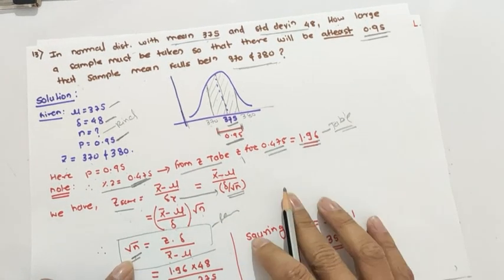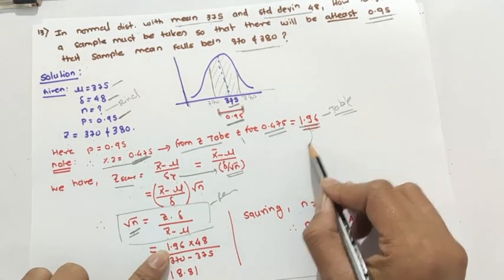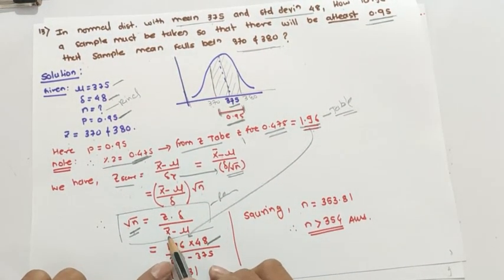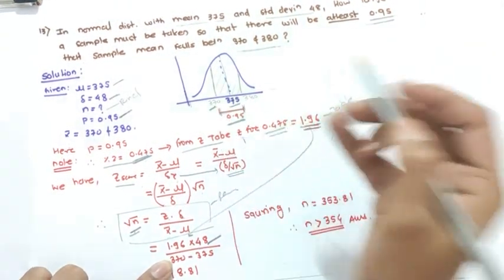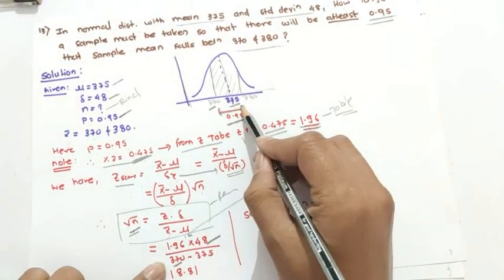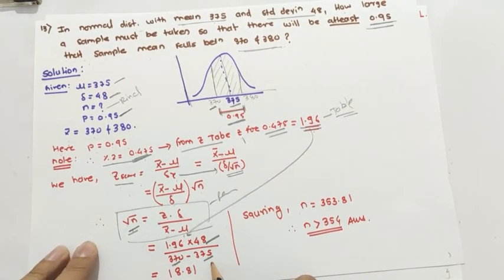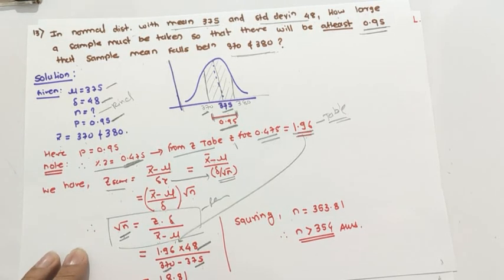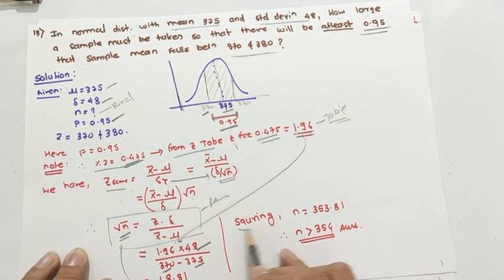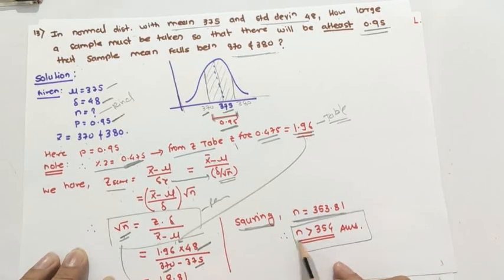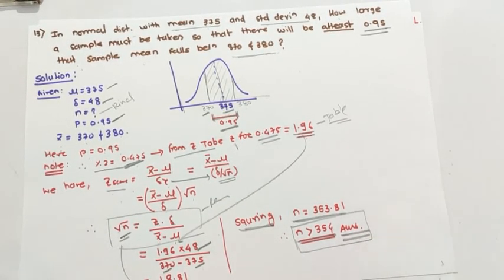Putting values: z is 1.96, sigma is 48, x-bar is 370, and mu is 375. So: 1.96 into 48 divided by 5 equals 18.816. Squaring both sides to get n: n equals 353.84, so the sample size should be greater than 354.